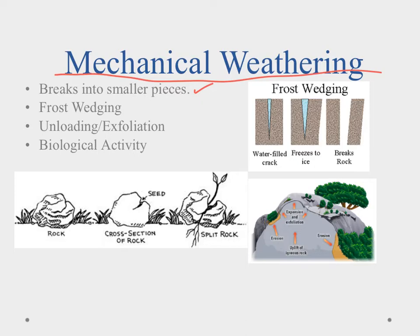The first is frost wedging. Frost wedging is when you have a little crack in the rock which fills up with water. If it gets cold enough, that water will freeze and as it does so it expands — just like a water bottle in the freezer will expand and distort the plastic. The same is true in the rock: the crack gets a little bit larger. That crack will fill up with water again and freeze again, repeated over and over until it breaks through the rock. This can take years; it's a repeated process.